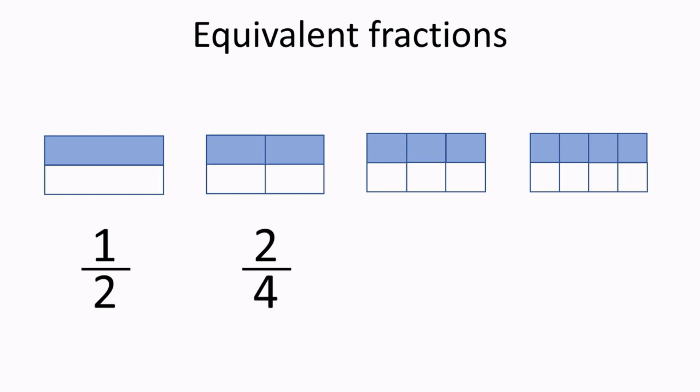The third box has 6 equal pieces, but 3 pieces are shaded, so the shaded portion represents 3/6. And again, it is still half of the box.